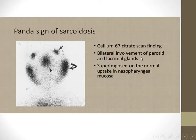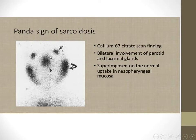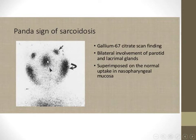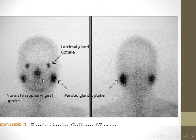The panda sign can also be seen in other diseases such as sarcoidosis. On scintigraphy with gallium-67, bilateral involvement of the parotid and lacrimal glands, superimposed on the normal uptake of the nasopharyngeal mucosa, together appear as a panda face. The abnormal parotid and lacrimal uptake forms the eyes, while the normal nasopharyngeal uptake forms the nose/mouth.